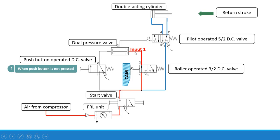The dual pressure valve will operate only when two inputs are present. As there is only one pressure input, it will not produce any output. So there will be no output produced at point 2, and therefore the air from the 5x2 valve enters from 1 to 2, then from 2 the air enters into the rod side of the double acting cylinder, and the air from the other side goes from port 4 to 5 to the atmosphere. So air is discharged to the atmosphere, and this gives us the return stroke — retraction of the piston inside the double acting cylinder.